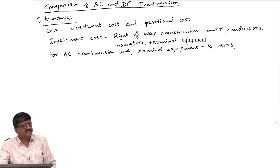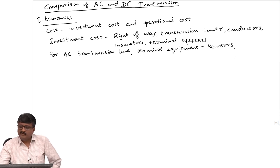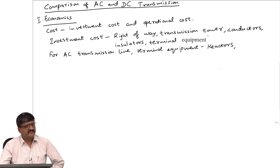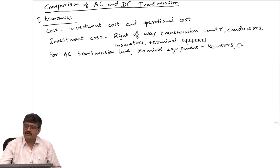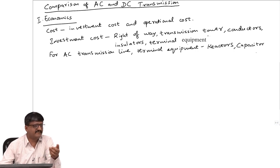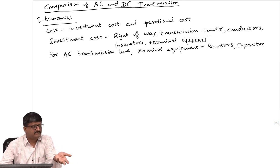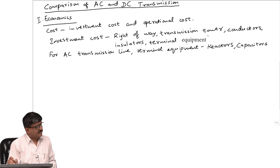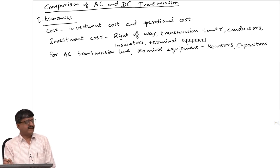You use a reactor to avoid over-voltage, but at the same time when there is heavy load there can be under-voltage. In that case one can put a capacitor. At some point I may connect a reactor; at other times I may remove the reactor and put a capacitor. Putting both simultaneously is counterproductive as one nullifies the other. So these — reactor and capacitor — are the two major terminal equipment for AC.